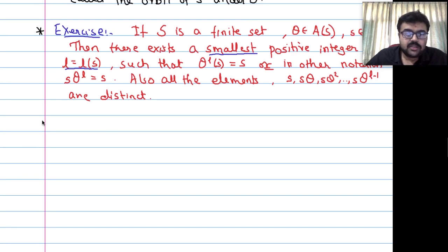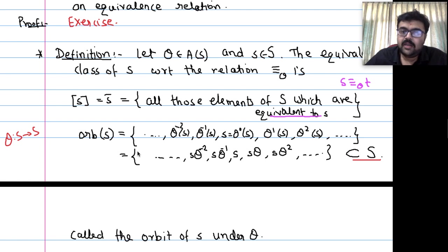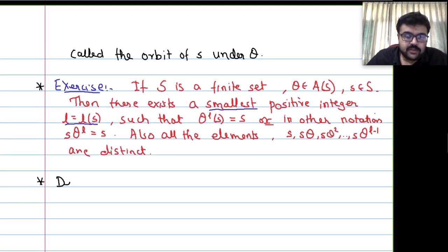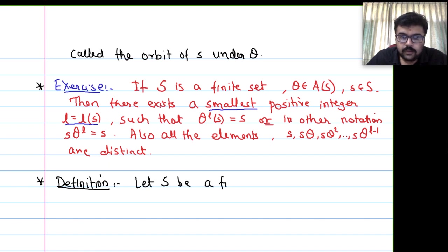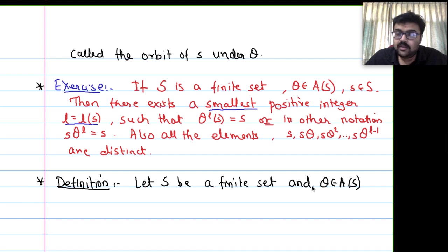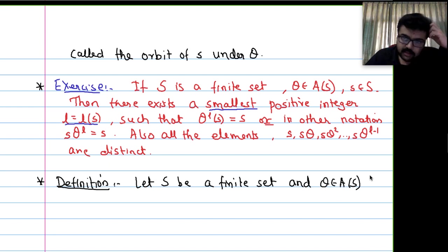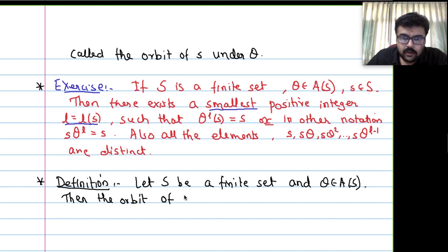Definition for finite S: Let S be a finite set, theta in A(S). Then the orbit of s in S under theta is the set {s, theta(s), theta^2(s), ..., theta^{L-1}(s)}, where L is the smallest positive integer such that theta^L(s) = s.